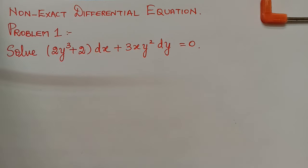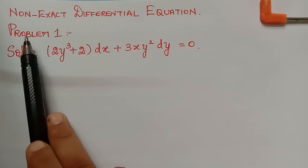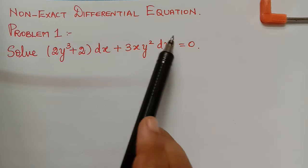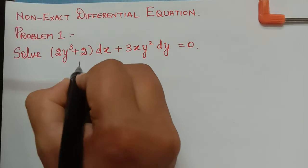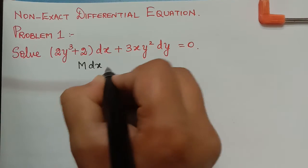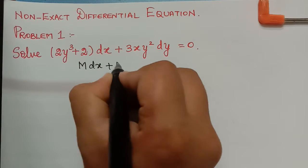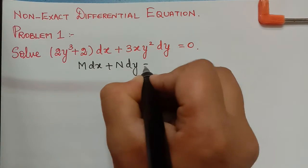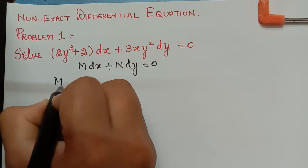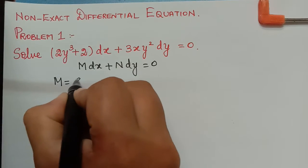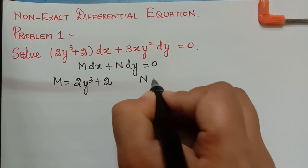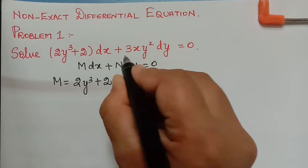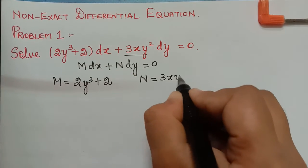Hello students. We shall now solve the first problem under the topic non-exact differential equation. The given equation is of the form M dx + N dy = 0, where M = 2y³ + 2 and N = 3xy².